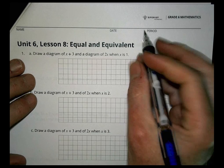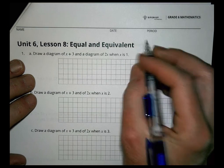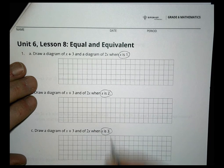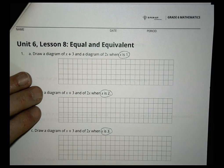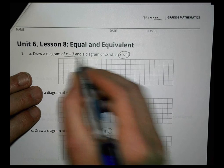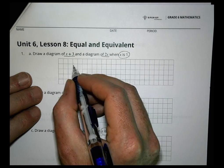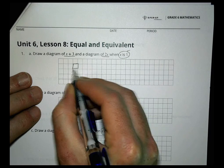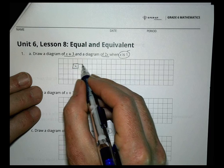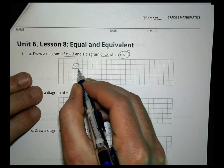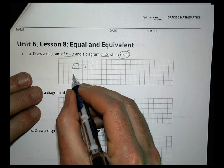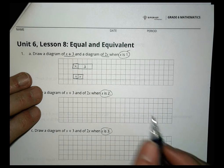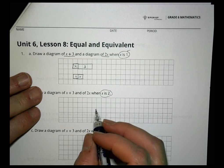Homework time. We're going to draw bars for expressions where x is 1, 2, 3, and 4, just like we did in class. First we have x plus 3 and 2x. When x equals 1, we make a square of 1 for x, then add 3 squares. For 2x, we do an x and another x. We see that these are not equivalent.